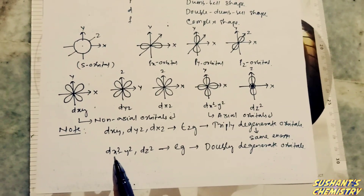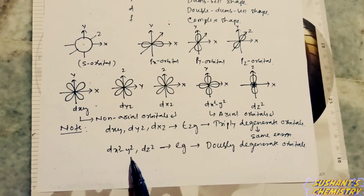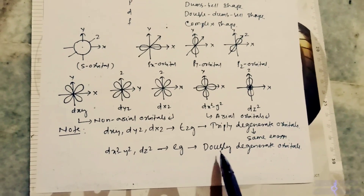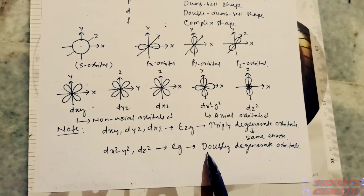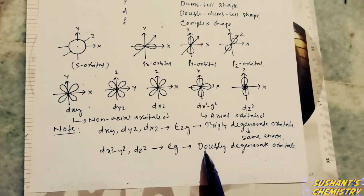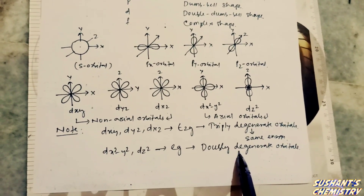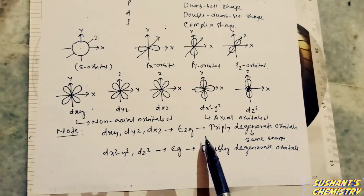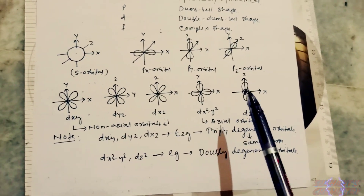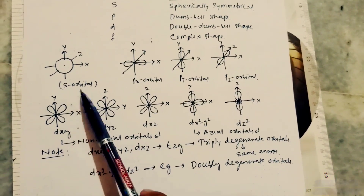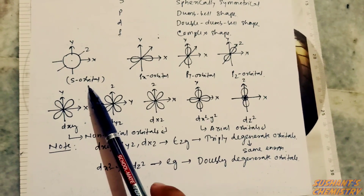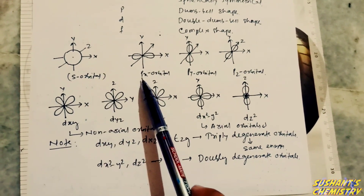The orbitals dx²−y² and dz² are called the eg set. These are doubly degenerate orbitals — two orbitals having the same energy.